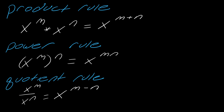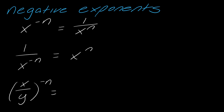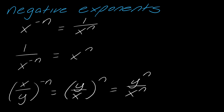Those are three of the main rules, and we also need to review negative exponents. If you have x to the negative n, this equals one over x to the n. Conversely, one over x to the negative n becomes x to the positive n. The way to think about it: a negative exponent in the numerator sends that base to the denominator, and vice versa. If you have x over y with a negative exponent, you can flip the whole fraction and then apply the power rule.